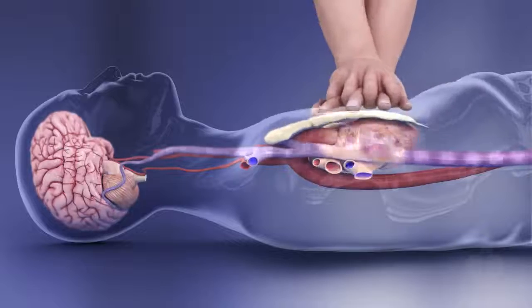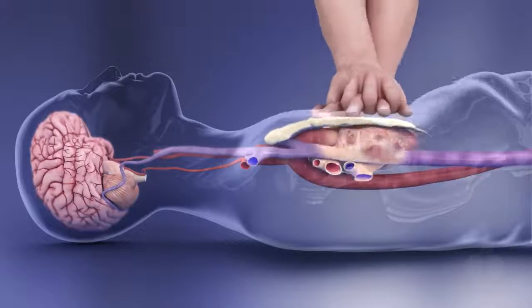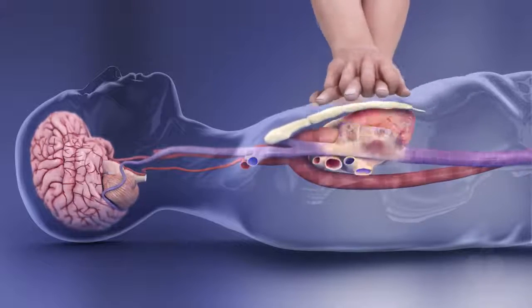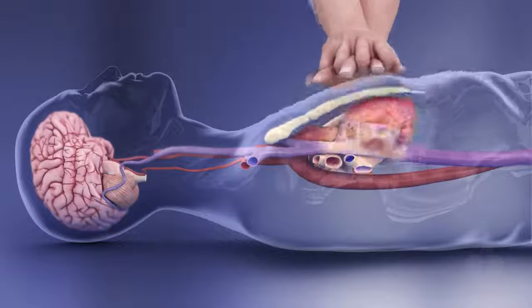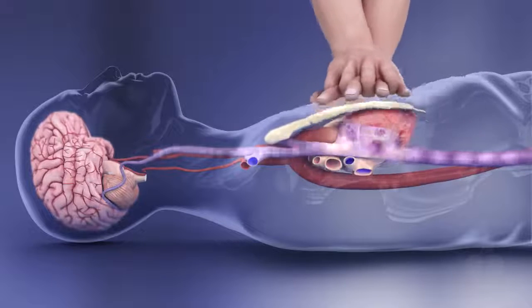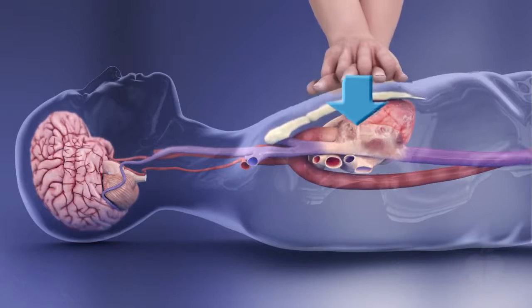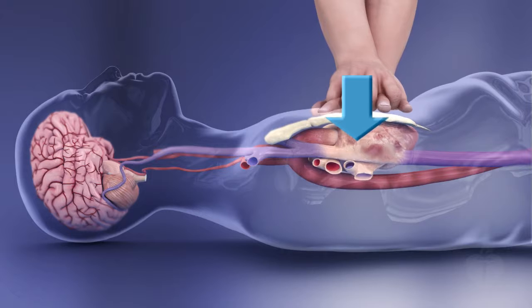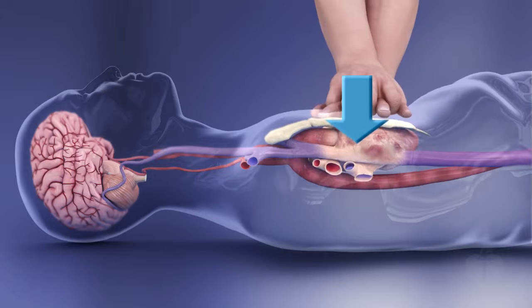High quality CPR maintains blood flow to vital organs, especially the heart and brain. The components of high quality CPR include adequate compression depth. Remember to push hard, compressing at a depth of at least two inches.